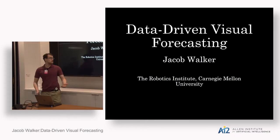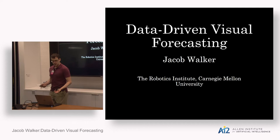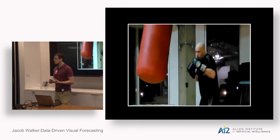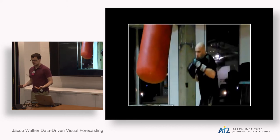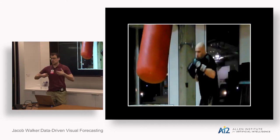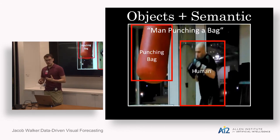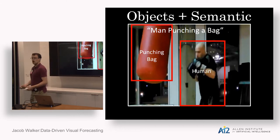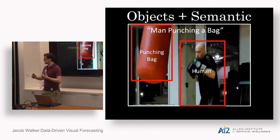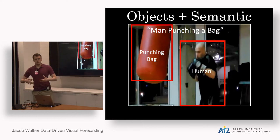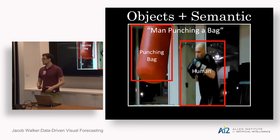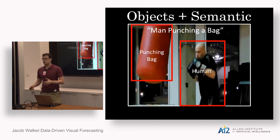I'm Jacob Walker and today I'm going to be talking about data-driven visual forecasting. Consider this image in front of us. Traditionally, researchers in computer vision have thought about understanding an image from very specific paradigms. One such paradigm is the object-oriented or semantic aspect, where we might try to classify and identify objects in the scene, apply human-chosen labels, detect objects, or even describe with a sentence what is going on.